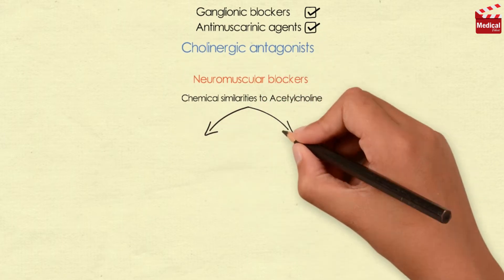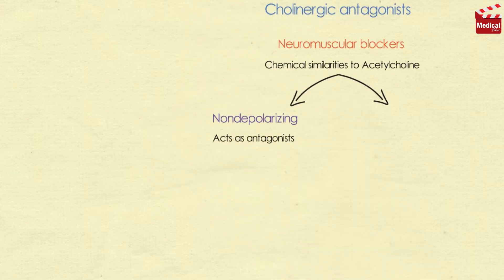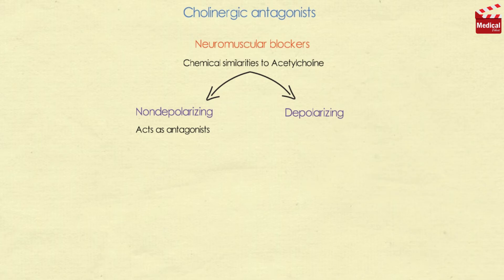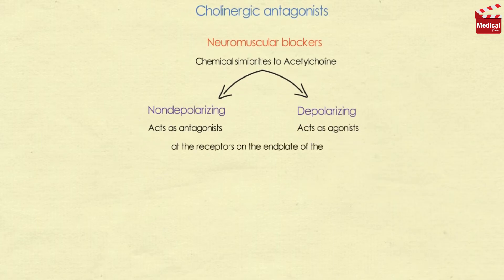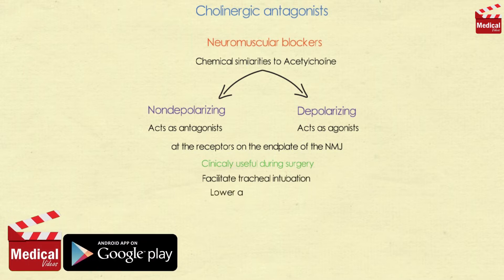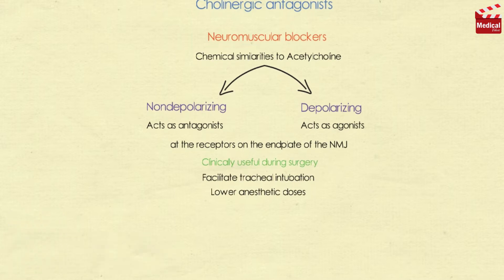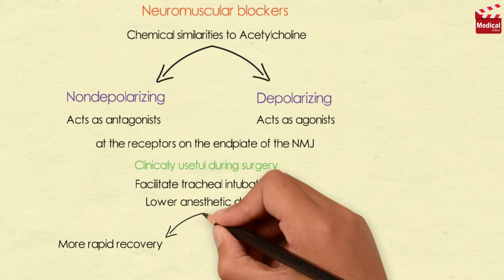They are divided into two groups according to their mechanism of action: the non-polarizing type that acts as antagonists, and the depolarizing type that acts as agonists at the receptors on the end plate of the neuromuscular junction. Neuromuscular blockers are clinically useful during surgery to facilitate tracheal intubation and provide complete muscle relaxation at lower anesthetic doses.